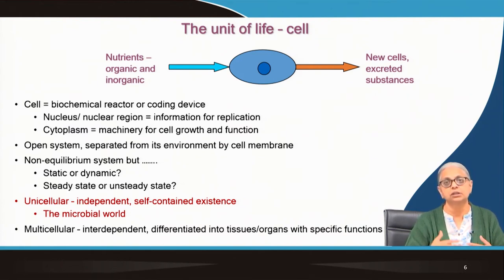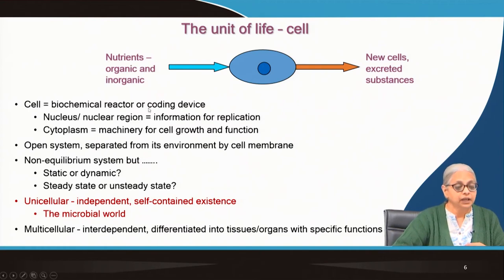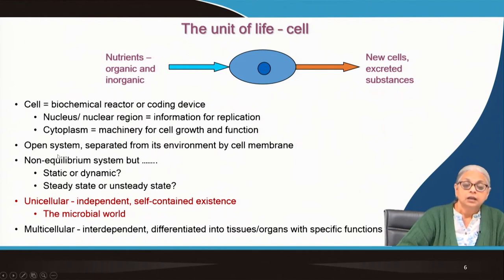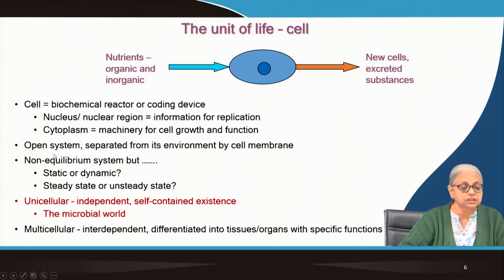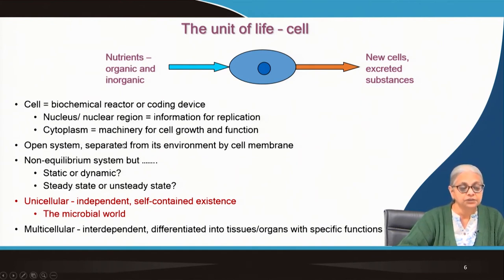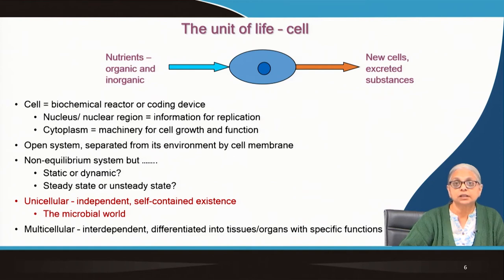Without the genetic code, the cell cannot reproduce. The survival of the species depends on the reproduction of individuals, so the cell is also a coding device — that code must be passed on from one generation to the next. Is the cell an open or closed system? It is an open system, defined by the fact that it takes up material and energy from the environment and puts out energy and mass into the environment. It is separated from the environment by a cell membrane; a cell wall is not necessarily present in all cells.